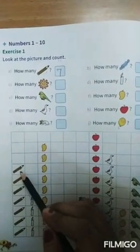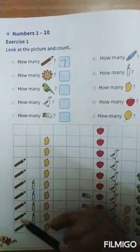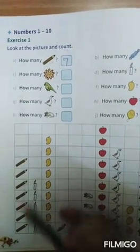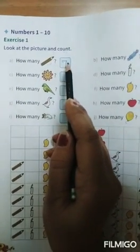How many pencils? Count. 1, 2, 3, 4, 5, 6, 7. How many pencils? 7. Write 7.